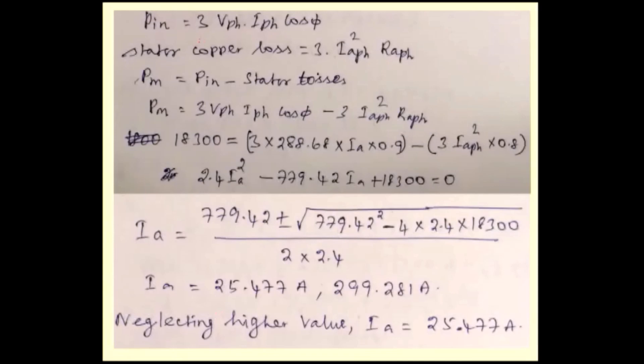Input power, what is the input power? 3 Vphase Iphase cos φ. Stator copper loss is 3 I² RA, I²Aphase into RA. Gross mechanical power developed is Pin minus stator loss. So Pm is 3 Vphase Iphase cos φ minus stator loss. Pm is 18300, then 3 Vphase value, then IA, then cos φ.